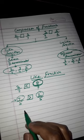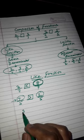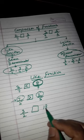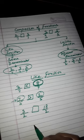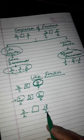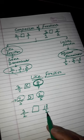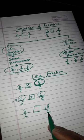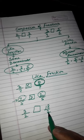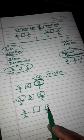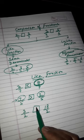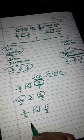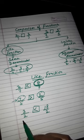Let us take another example: 3 upon 2 and 18 upon 2. Here again we have the same denominators. We have to identify which fraction is greater by looking at the greater numerator. Since 18 is the greater numerator, 18 upon 2 is the greater fraction than 3 upon 2.